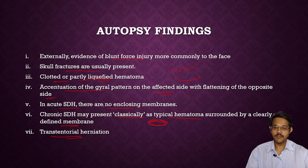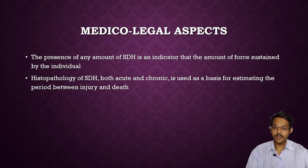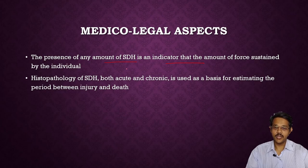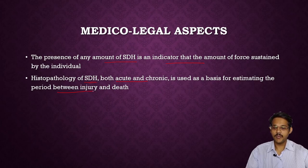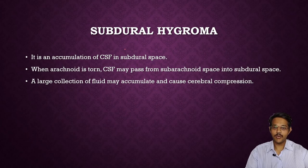Medical aspects of subdural hemorrhage: the presence of any amount of subdural hemorrhage is an indicator of significant force sustained by the individual, indicating a violent incident. Histopathology of subdural hemorrhage — both acute and chronic — is used for estimation of the period between injury and death, which is very helpful in determining the time since injury occurred.